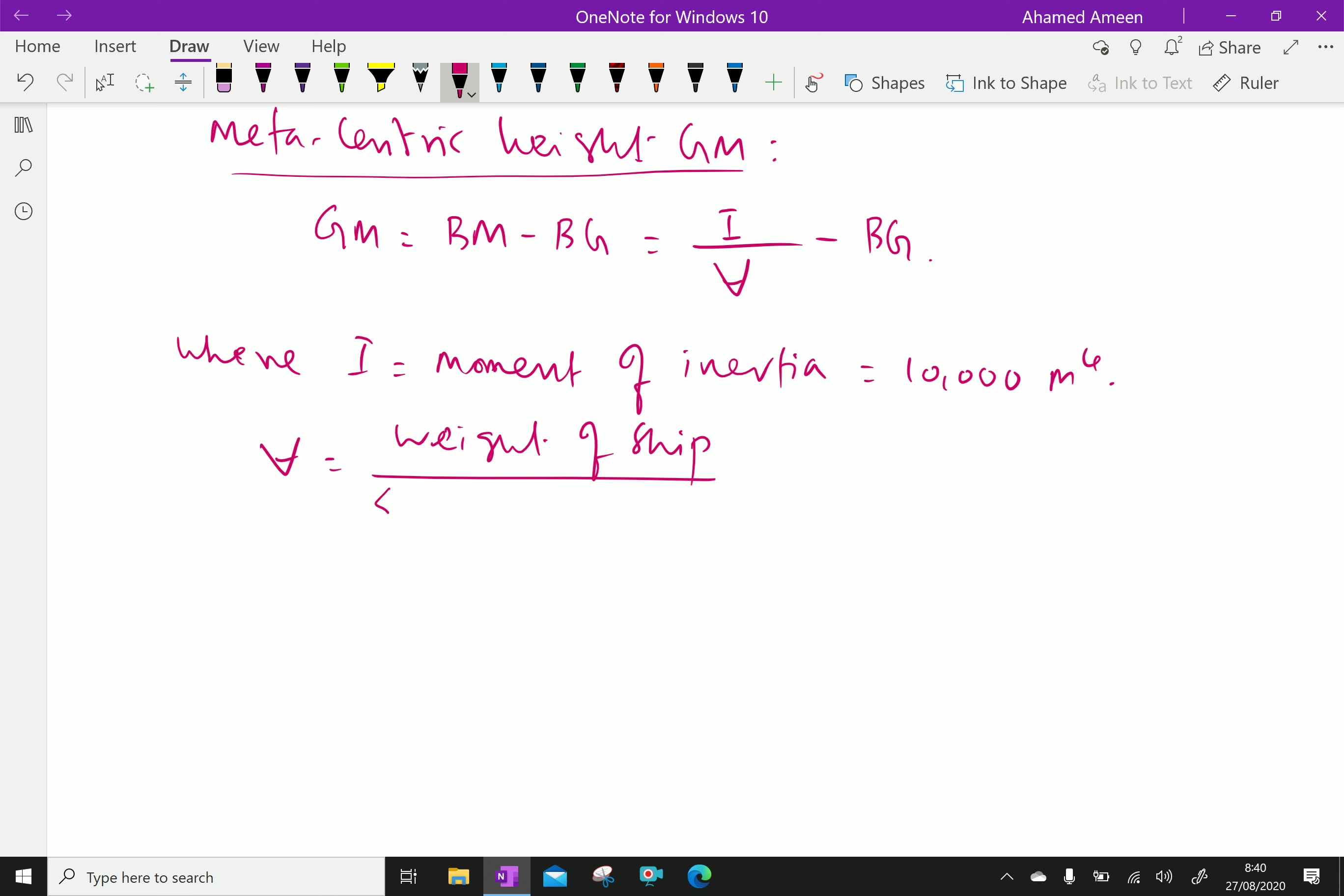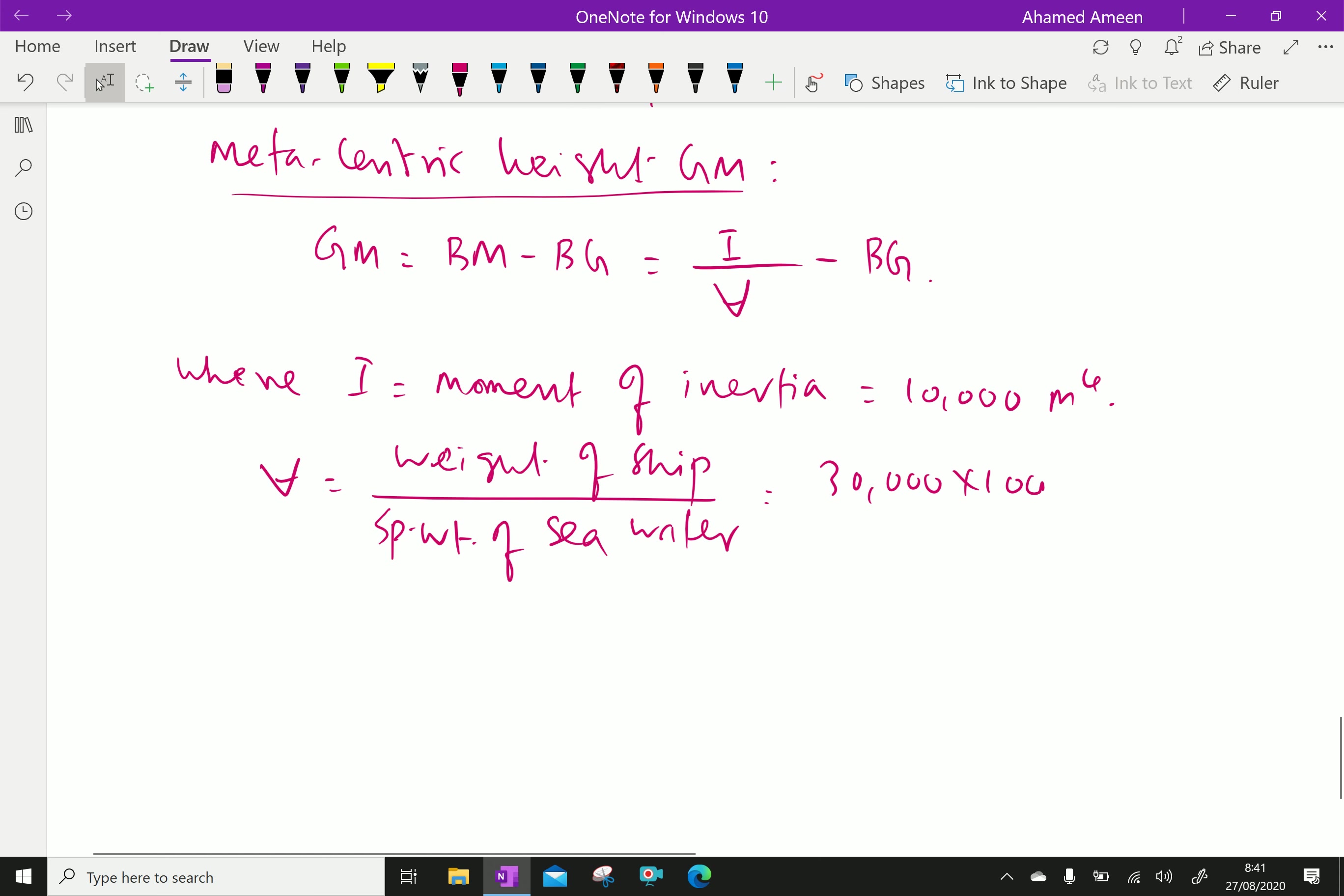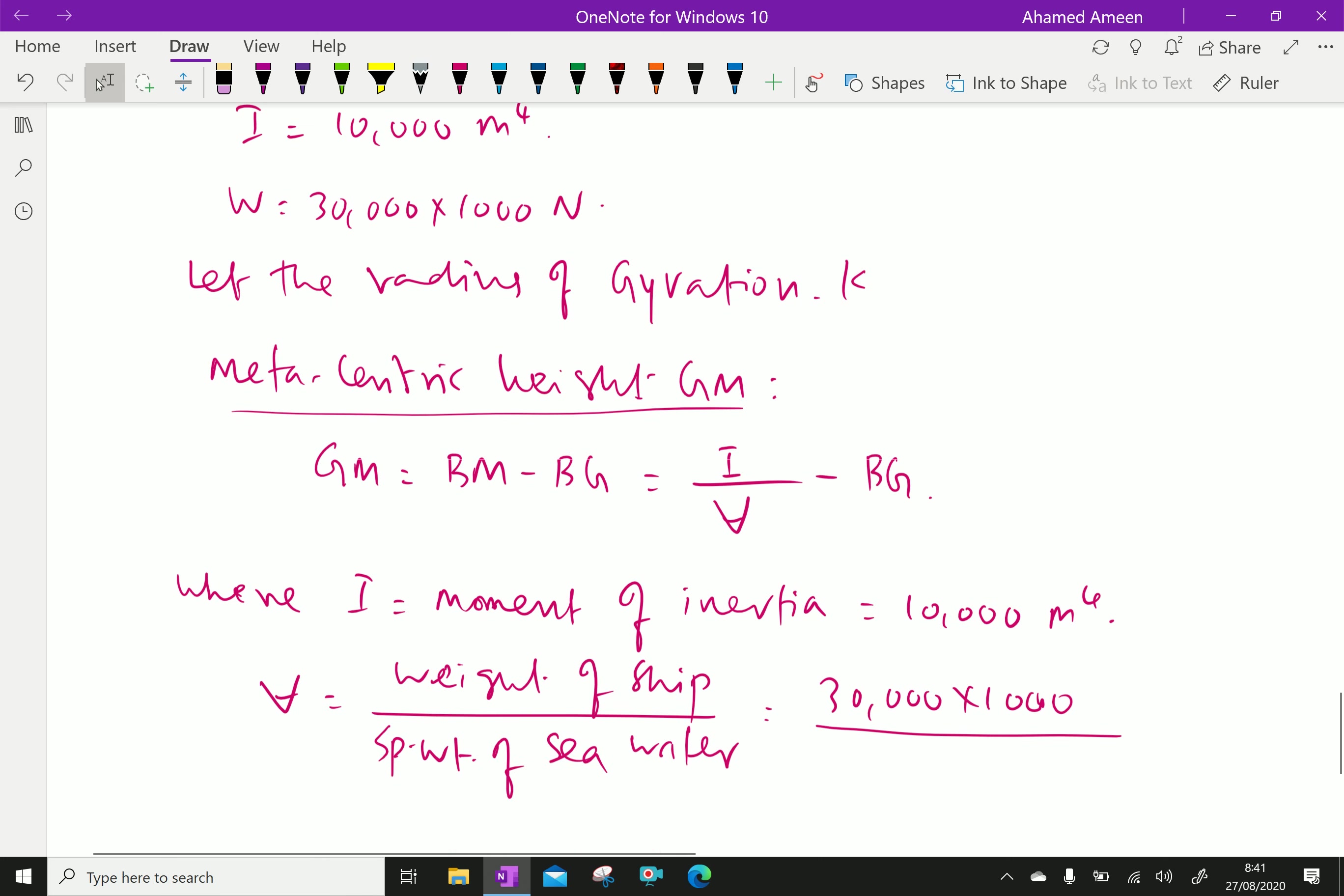We calculate V as weight of ship over specific weight of seawater, equals 30,000 into 1000 over 10,120.